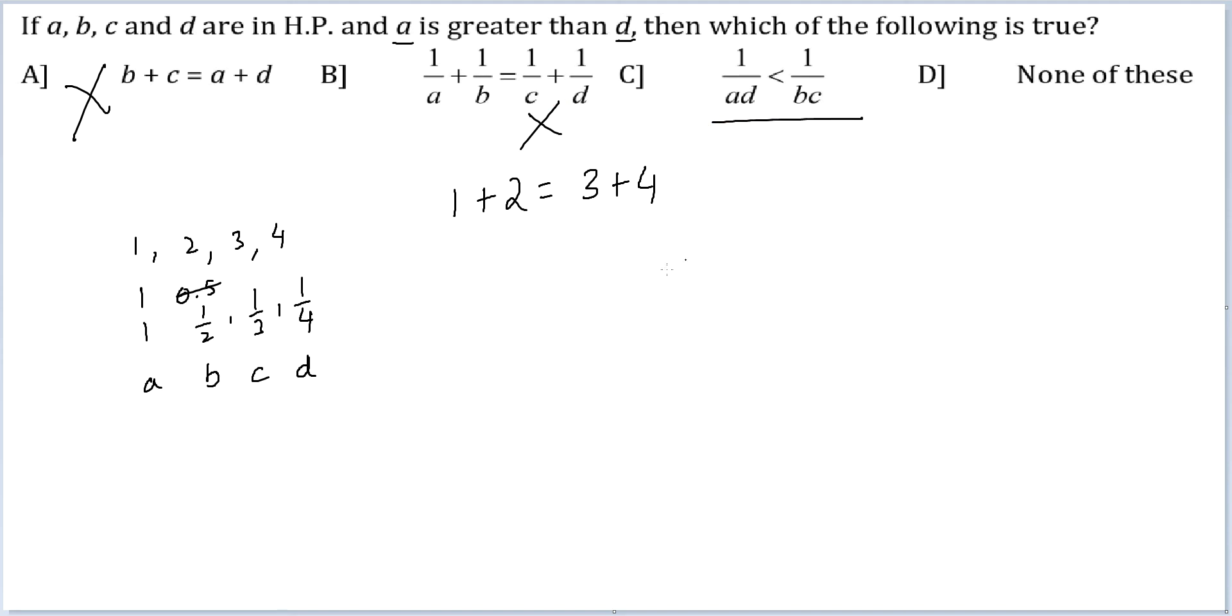Let me look at this, AD. So I have 1 by 4 and reciprocal of 1 by 4 is 4 and 1 by BC is 1 by 6, C is 6. So this is potentially true.